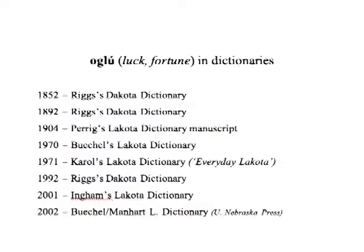One word I learned from the Beekle Dictionary is the word 'oglu,' defined in the dictionaries as luck and fortune. I learned it around 1986, then came to Lakota country in the early 90s and used it — nobody understood me. Throughout the years of doing research for the dictionary, I kept asking people, 'Do you know this word oglu?' It's now been over a hundred fluent native speakers, old and young, some very old fluent speakers who have since passed away. None of them knew the word oglu.